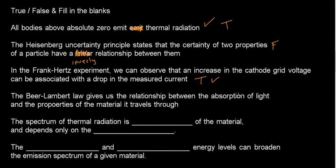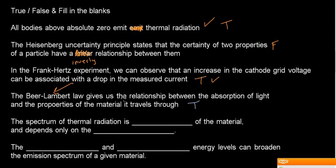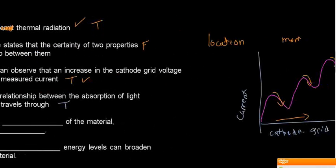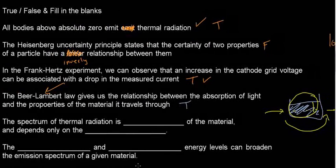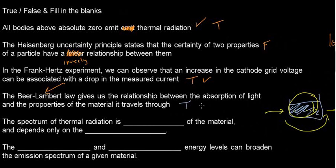The Beer-Lambert law gives us the relationship between the absorption of light and the properties of the material it travels through. I haven't seen more than one true/false question about this law in this course, but it is well represented in any physics course. The Beer-Lambert law lets us solve for the intensity we can expect at any given point given the properties of the absorbing material. So this statement is TRUE.